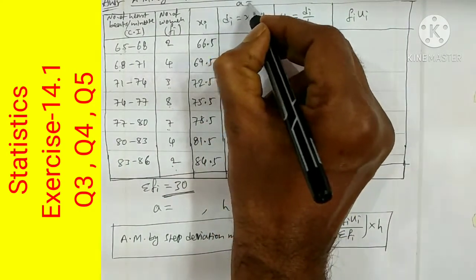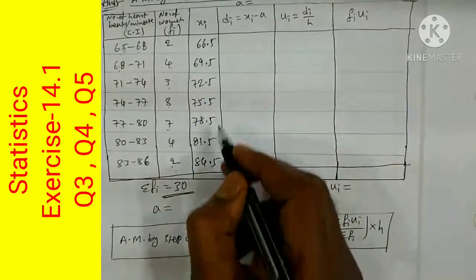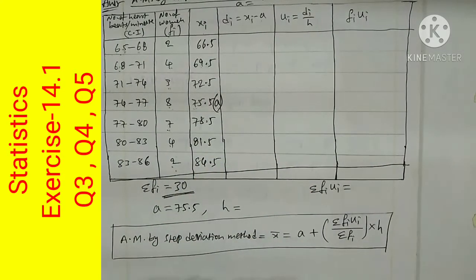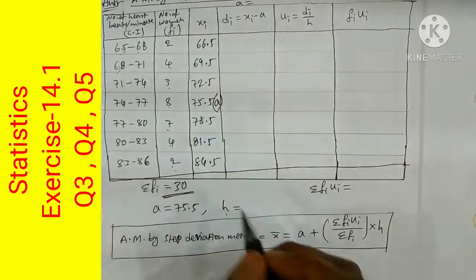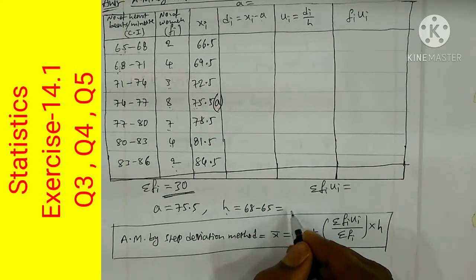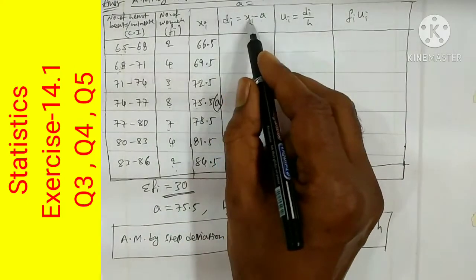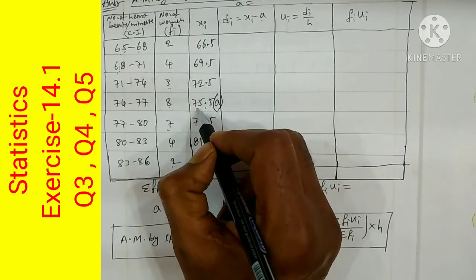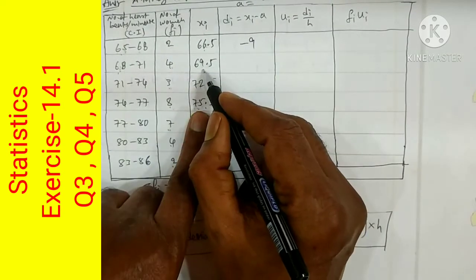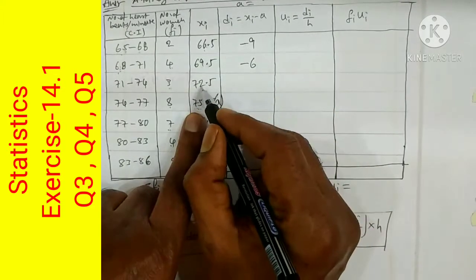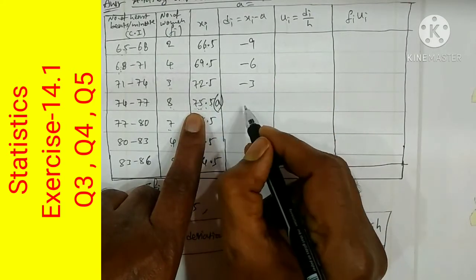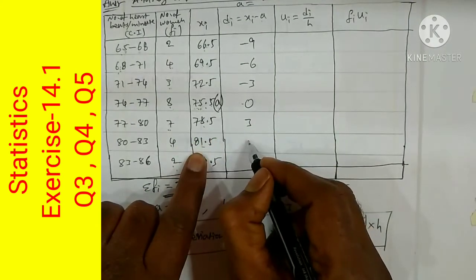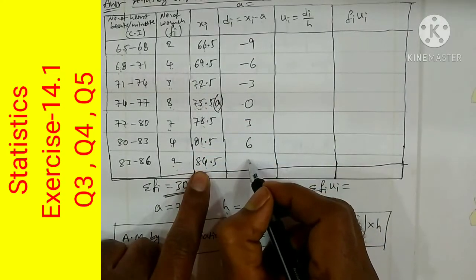For the step deviation method, we select the assumed value A = 75.5 (the middle value). H = 3. We compute Di = Xi − A: 66.5−75.5=−9, 69.5−75.5=−6, 72.5−75.5=−3, 75.5−75.5=0, 78.5−75.5=3, 81.5−75.5=6, 84.5−75.5=9. Then Ui = Di/H: −3, −2, −1, 0, 1, 2, 3.